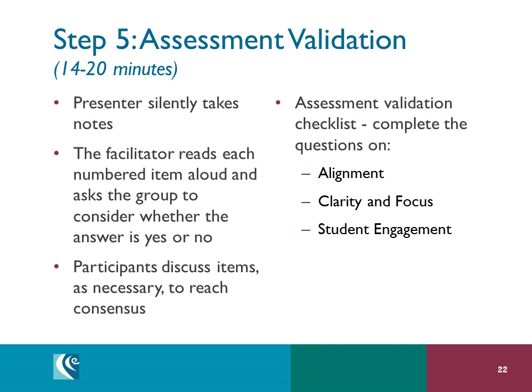Next is student engagement — here we ask: where are there opportunities for student choice? Is the task connected to a real world issue? Criteria and levels is all about the rubric: is the rubric clear? Does it assess what it intends to assess? For fairness, we ask: is this accessible to all kids? Are there scaffolds available? Finally, universal design is about the format — can all kids identify the steps and products? Are the documents visually accessible?